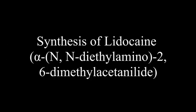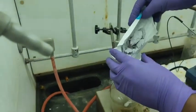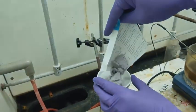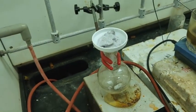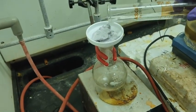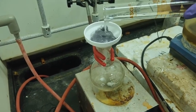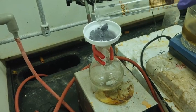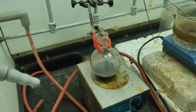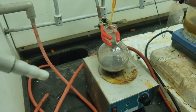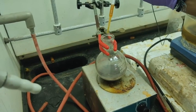Part two: synthesis of lignocaine. The product from the previous step was transferred to a round-bottom flask by dissolving it in 25 mL of toluene. Under stirring conditions, add three equivalents of diethylamine into the solution in a dropwise manner.